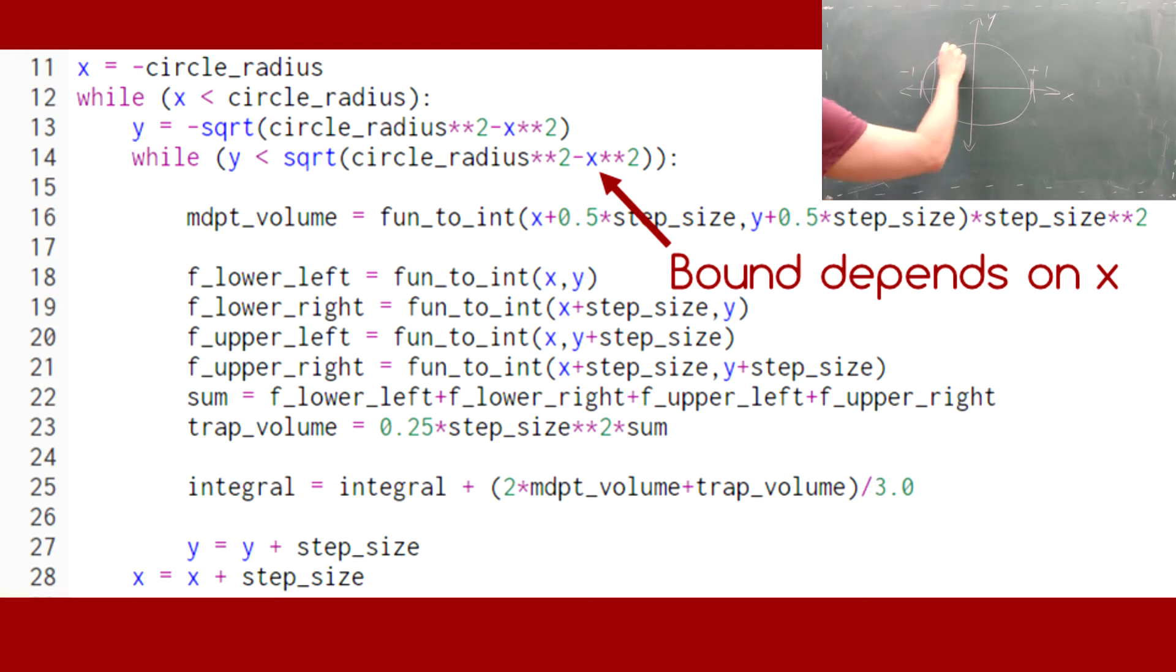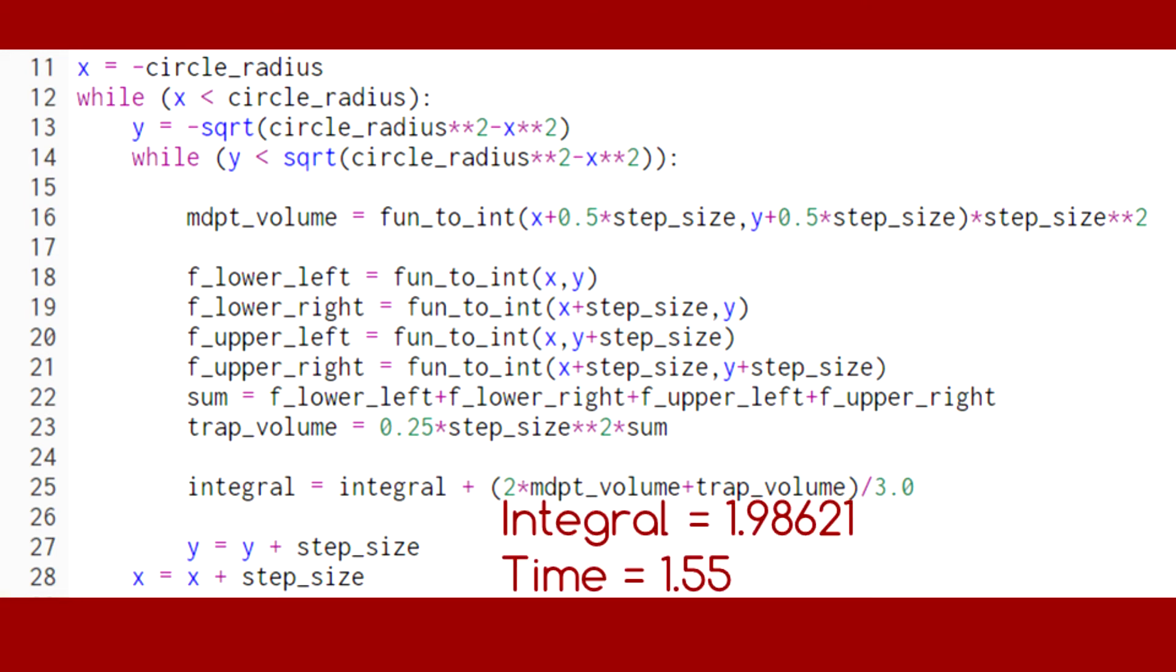Here, for example, we have x vary from negative one to one, while the bounds for y are given by the equation for a circle, making the bounds for y different each time we loop over x. The answer we get is fairly accurate and, as promised, it took a fair chunk of time to arrive at this result.